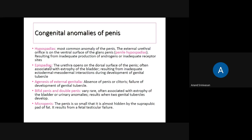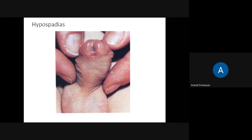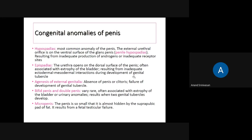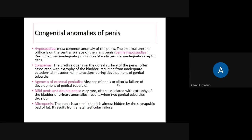Epispadias: the urethra opens on the dorsal surface of the penis. This is usually accompanied with exstrophy of the bladder — meaning the urinary bladder is also open towards the exterior. Epispadias is because of inadequate ectodermal-mesodermal interactions during the development of the genital tubercle; it has nothing to do with androgens, unlike hypospadias.